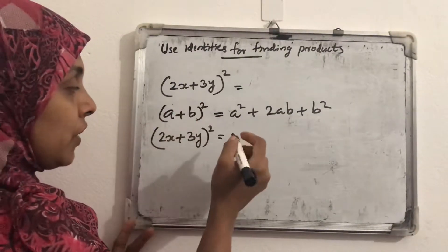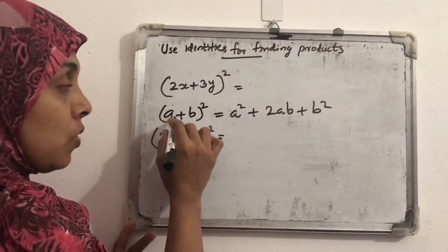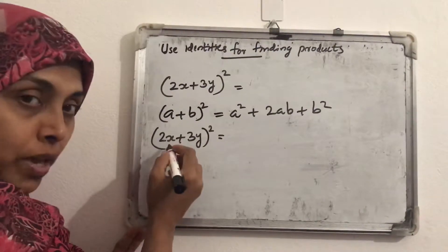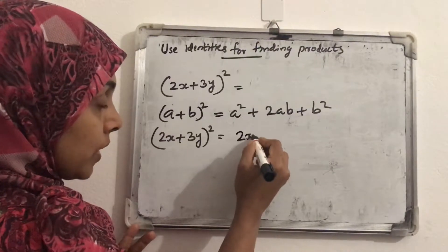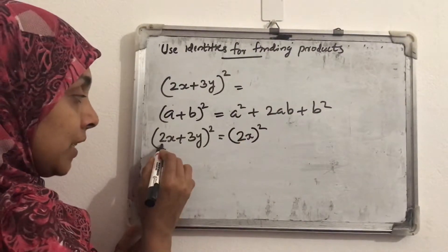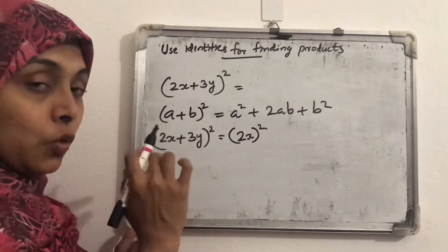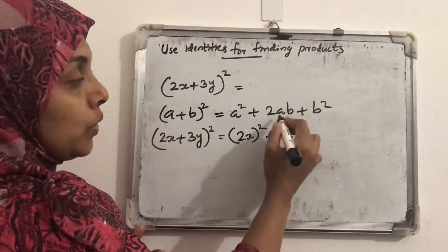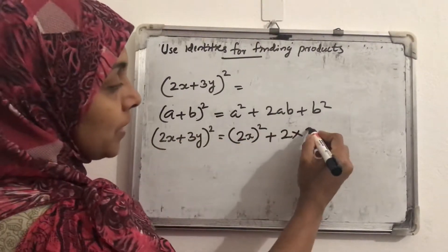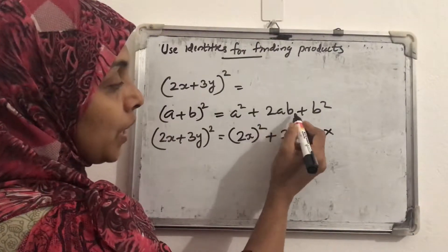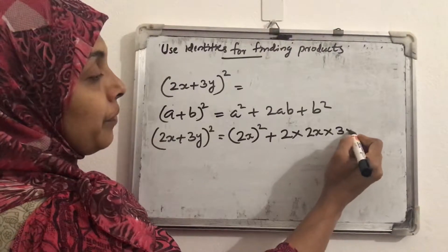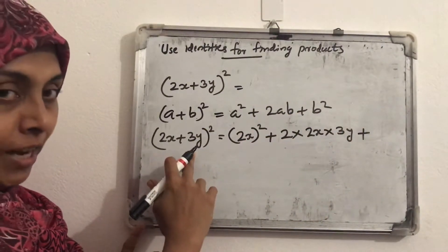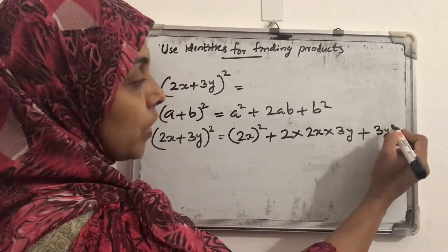So we can find out the result. The first term is a² — in this case, it will be (2x) whole square. Then plus 2 into a, where a is 2x, into b, where b is 3y. Second term is done. Then the last term plus b², so instead of b we write 3y and take its square — 3y whole square.